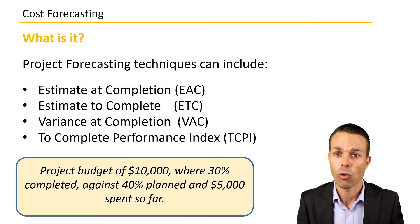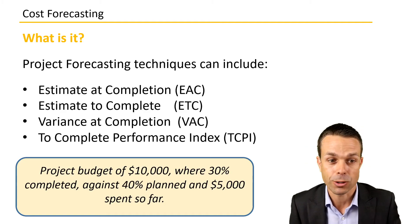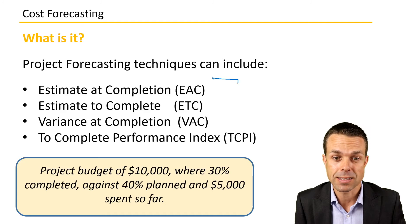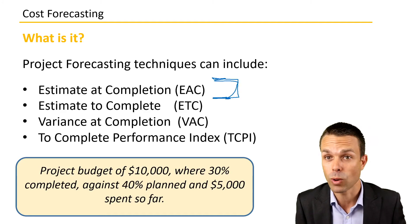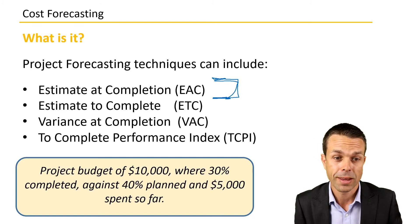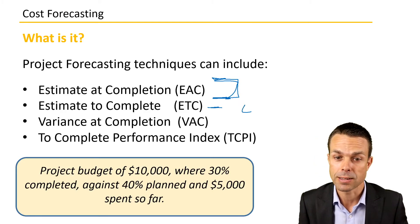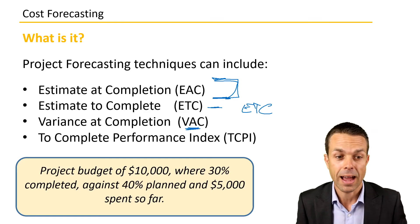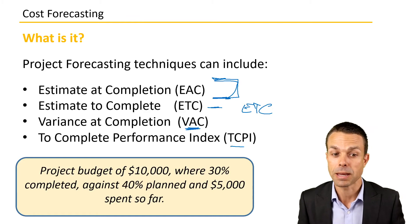There are four main things that you will see on the PMP exam and in your project management career. The main one we're looking at today is the Estimate at Completion (EAC), because there are lots of different ways of measuring and calculating this. The other ones we'll go through in another video are the Estimate to Complete (ETC), the Variance at Completion (VAC), and the To Complete Performance Index (TCPI).